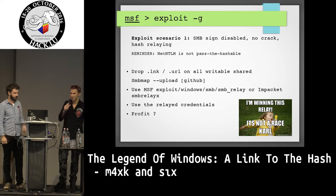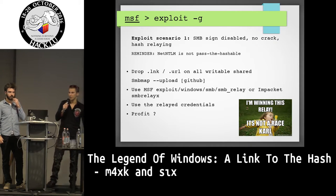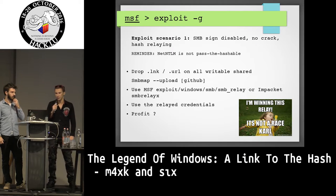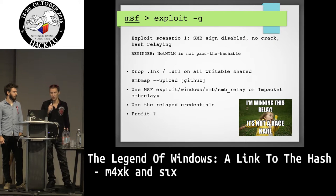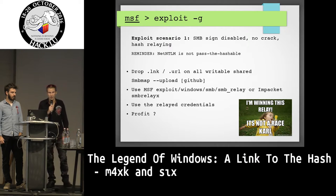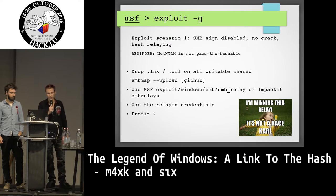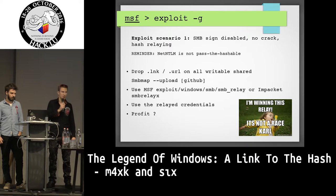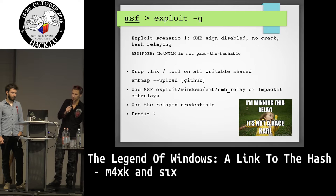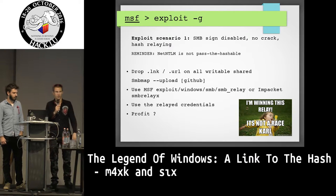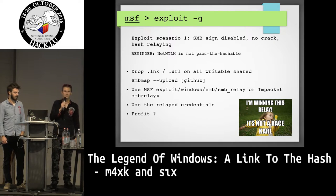The first exploitation scenario is when SMB signing is disabled. In this case you don't even need to crack the hash — you can relay those hashes you receive. By creating this simple URL file, which takes about three or four clicks, you type the address where you want to link, you get the hash and you relay it. SMB signing is disabled in most places because system administrators don't want to configure it. How many people have this enabled? Okay, one — cool.